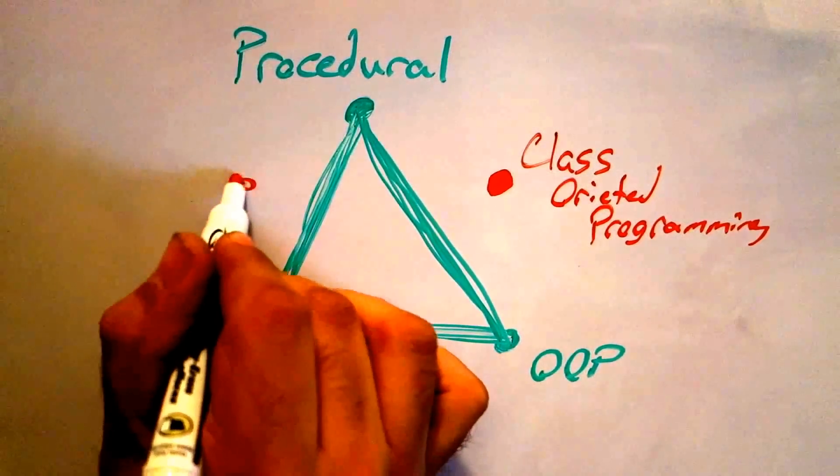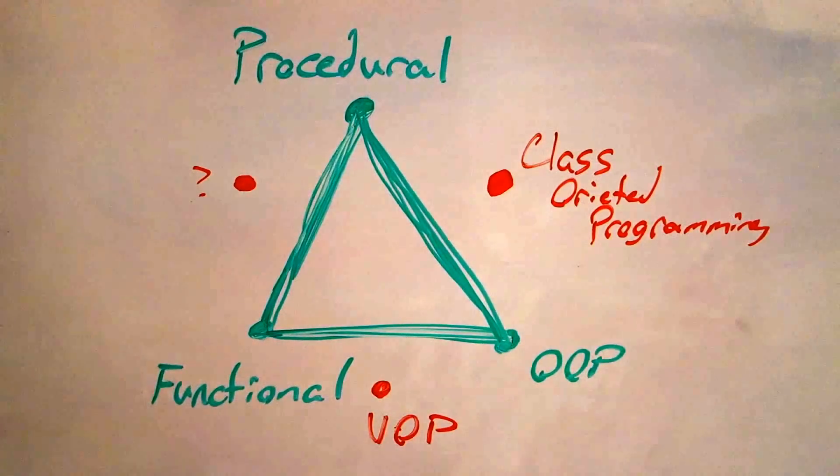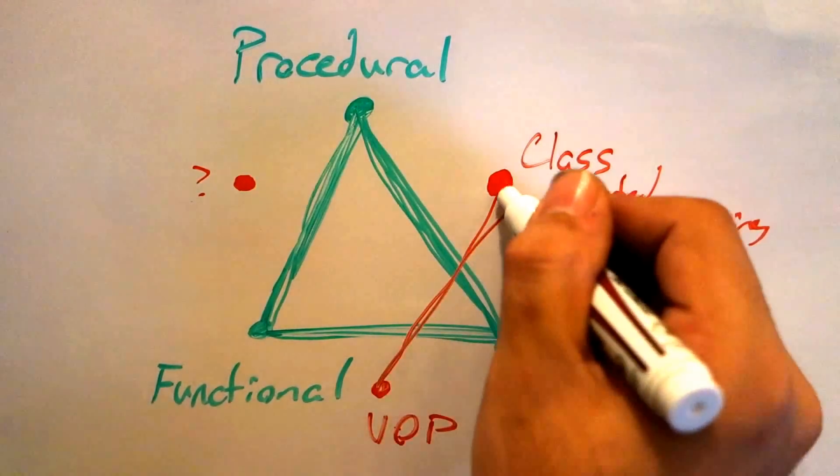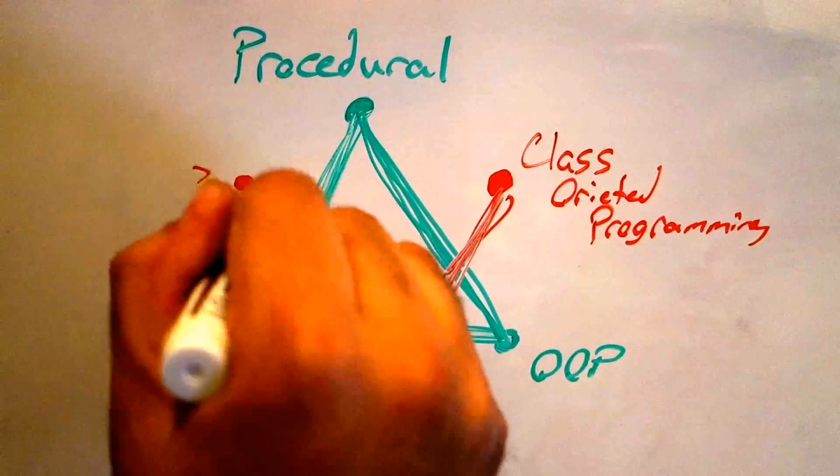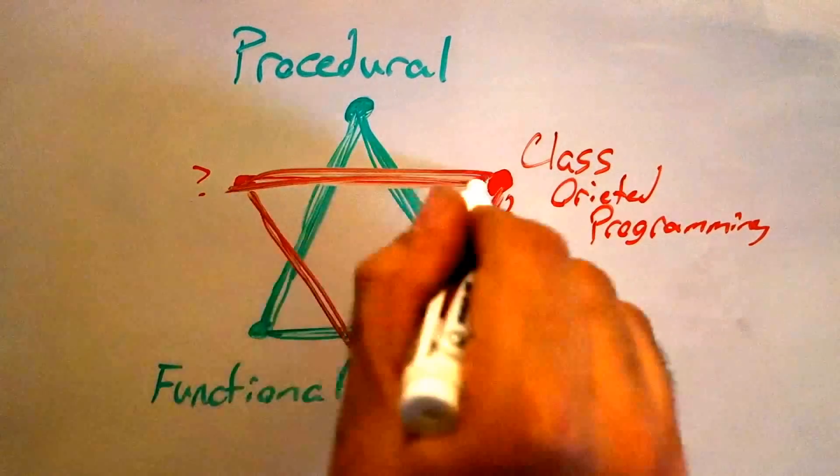And we could do the same thing with functional and procedural programming. We can give that a name as well. So now if we look at our triangle, we also have these three dots on the outside. And if we connect them, we get a second inverted triangle.